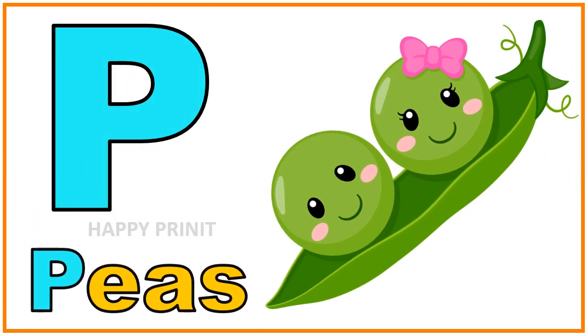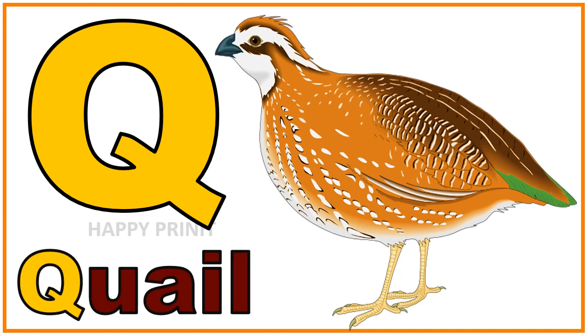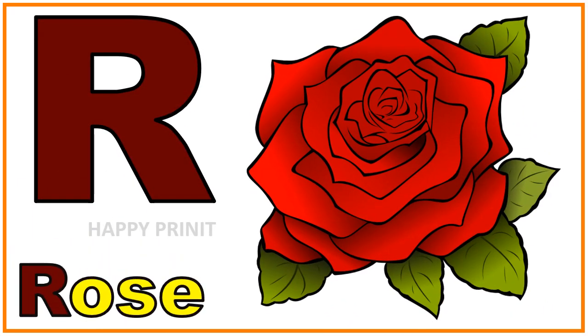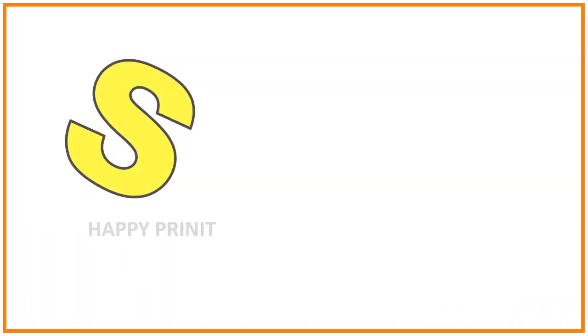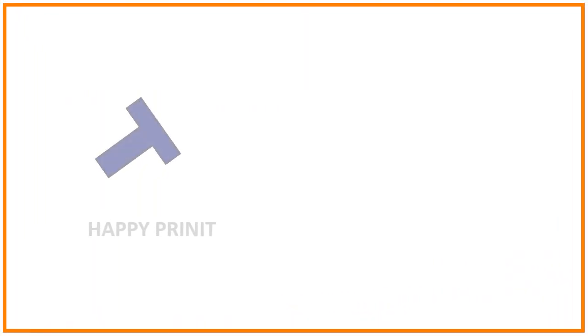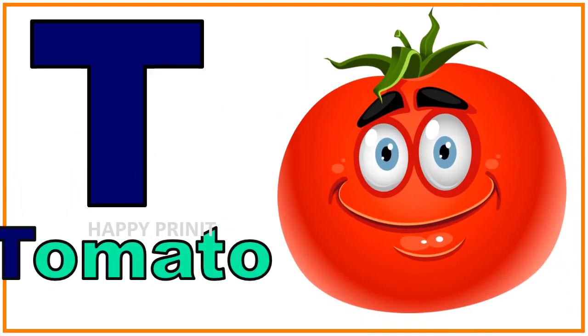P. P for Peas. Q. Q for Quill. R. R for Rose. S. S for Strawberry. T. T for Tomato.